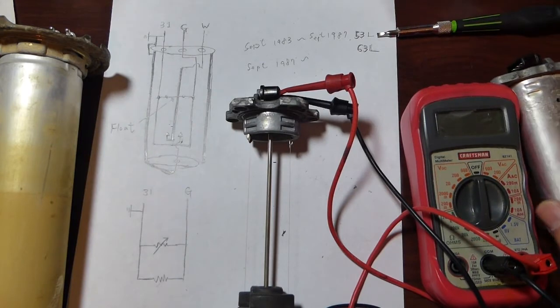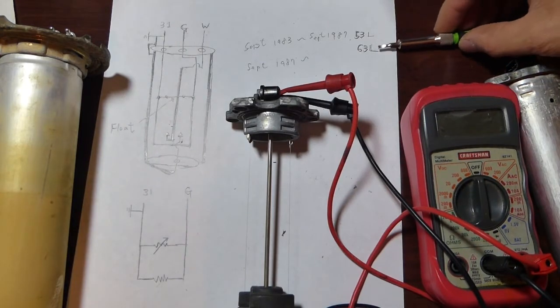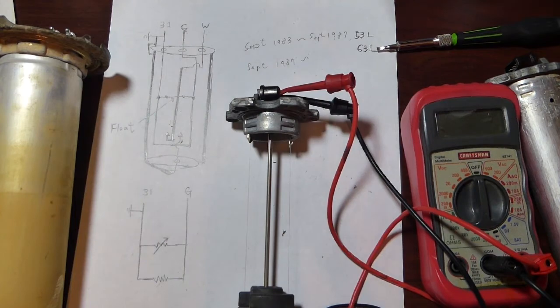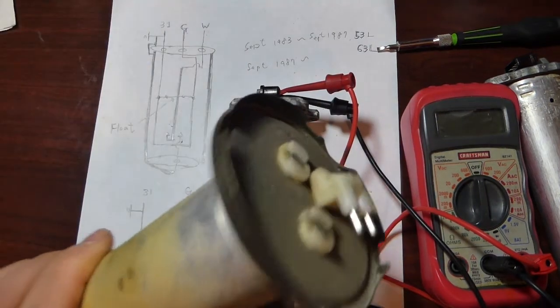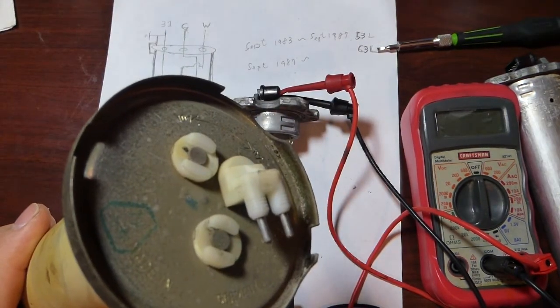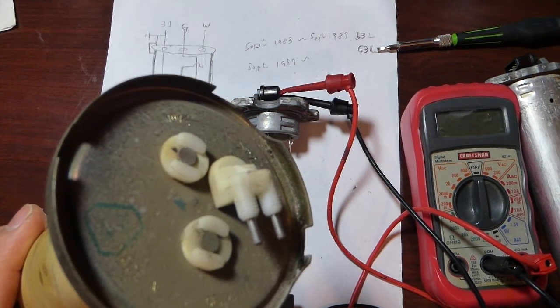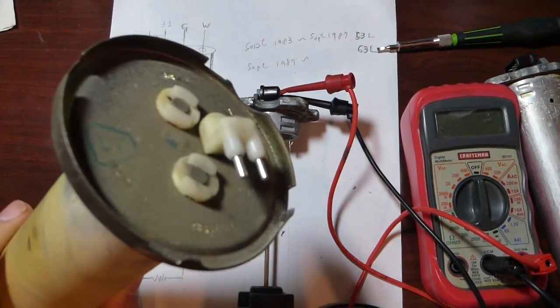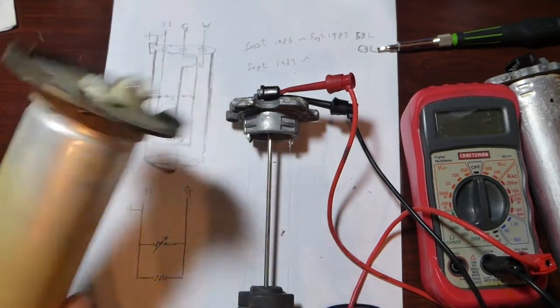If you have a 63 liter tank, you know that you have a second fuel sending level unit, and this is actually located on the other side of the tank.